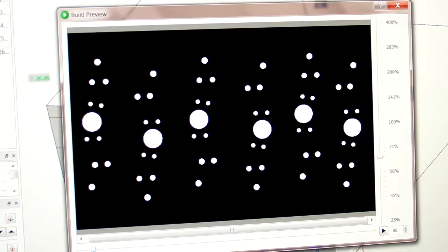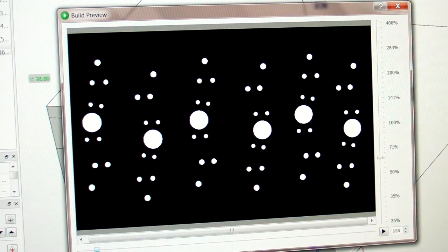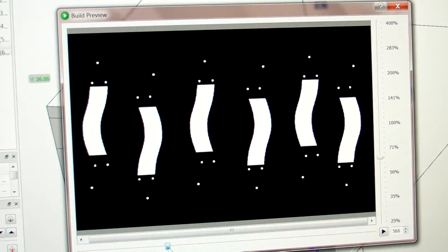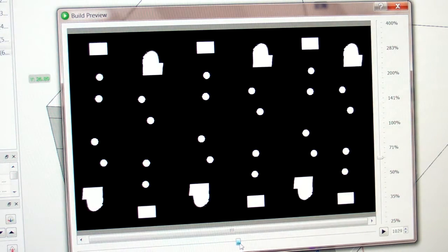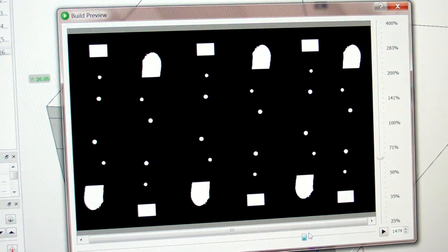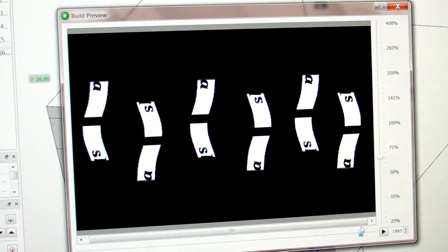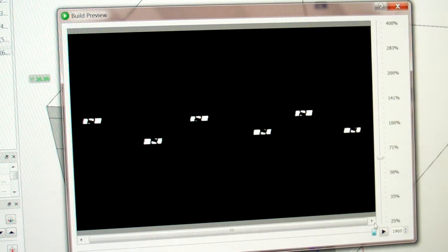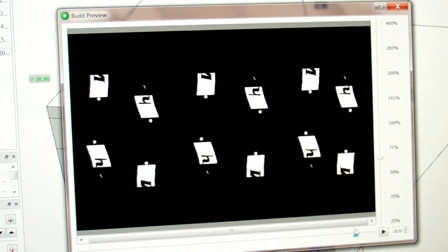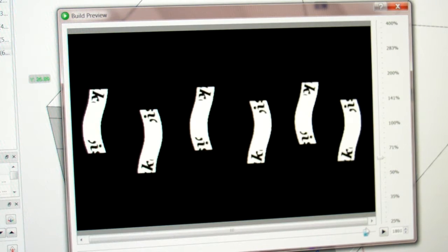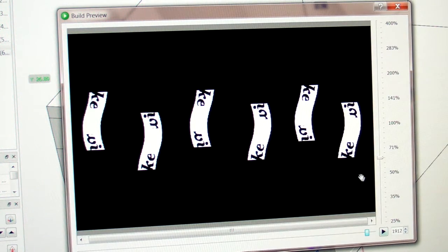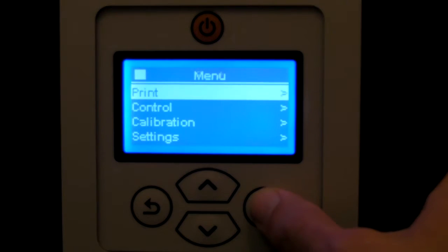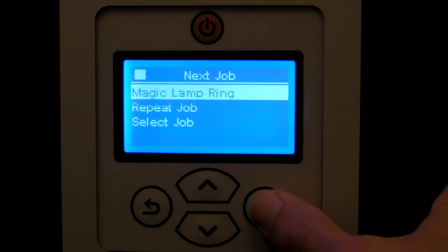Once all that's done and you send your Composer file to the Pico, it will show you a cross-section view of how it's going to be printed, which I think is pretty neat. What you see here is layer after layer of what the projector is exposing to cure the resin. Now we start our grow and let the machine do its work.